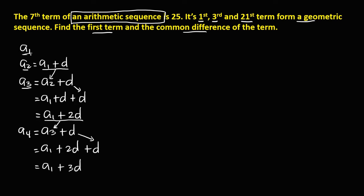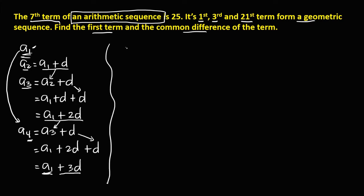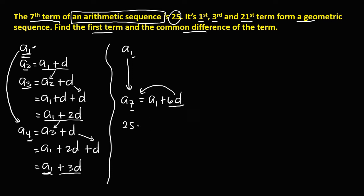In general, to find the nth term from a1, the 4th term is a1 plus (4 minus 1) times d, which is 3d. For the 7th term, a7 equals a1 plus (7 minus 1) times d, that's a1 plus 6d. Since the 7th term is 25, we have a1 equals 25 minus 6d. This is the first equation.